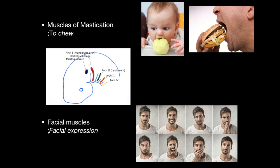In this video I'm going to talk about the facial muscles, which are part of the muscles of the head. All muscles of the head are divided into two groups: the muscles of mastication, which allow you to chew your food, and the facial muscles, which are responsible for facial expressions like laughing, thinking, angry, surprised, whatever. The muscles of mastication are derivatives of the first visceral arch during embryonic development, while the facial muscles come from the second visceral arch.